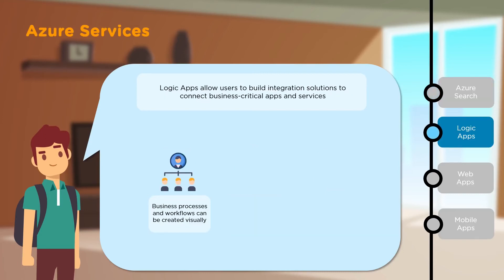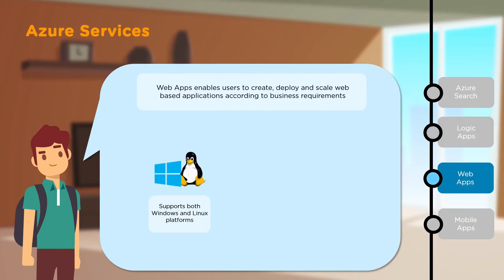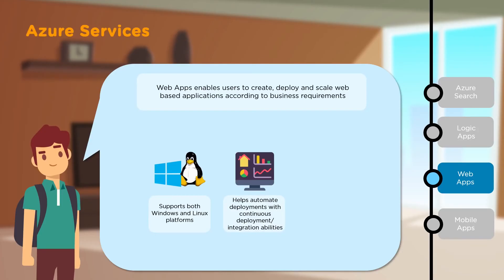Next, we have Logic Apps, which allows you to create integration solutions that connect applications important to your business. You can visually create business processes and workflows, integrate SaaS and enterprise applications, and unlock data within a firewall to securely connect to services. Then we have Web Apps, with which you can create, deploy and scale web applications according to business requirements. It supports both Windows and Linux platforms, helps with continuous integration and deployment, and data can be deployed and hosted across multiple locations in the world.